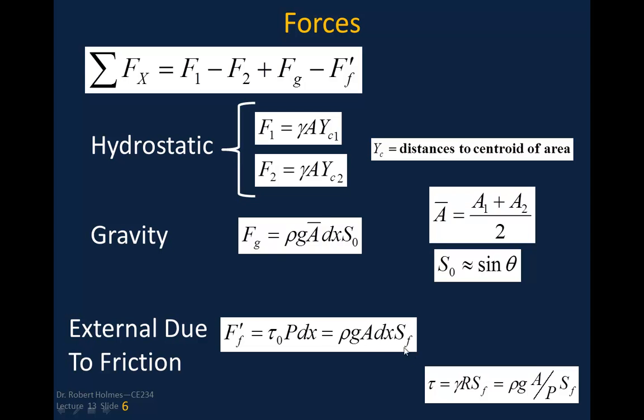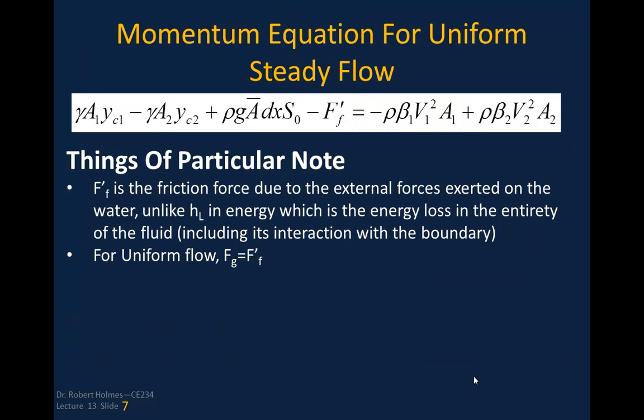If we think of that in terms of an earlier derivation that we've done a couple of lectures ago, where we showed this actual derivation against the S sub F. Basically here, tau is equal to gamma R S sub F. That was a derivation that I had done a couple of lectures ago, when we derived the equations for the Manning equation and the Chezy equation.